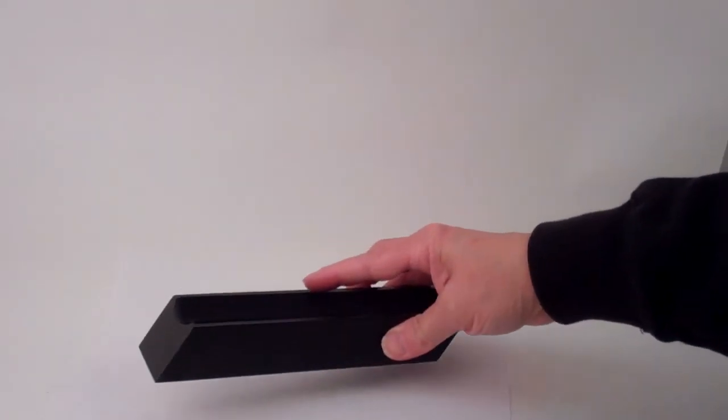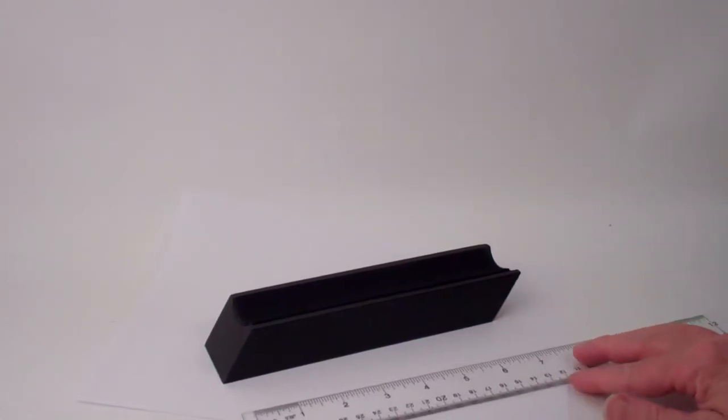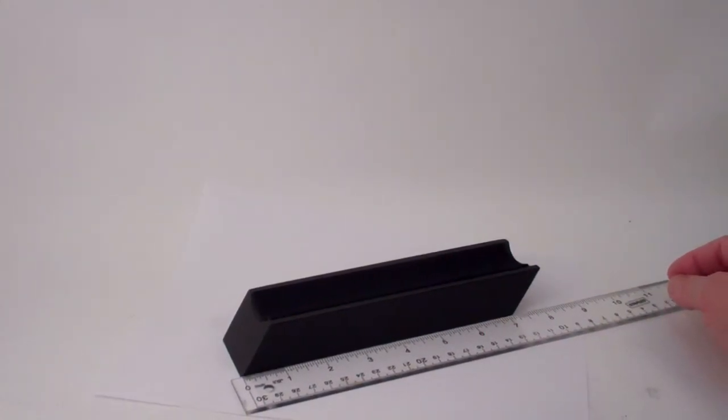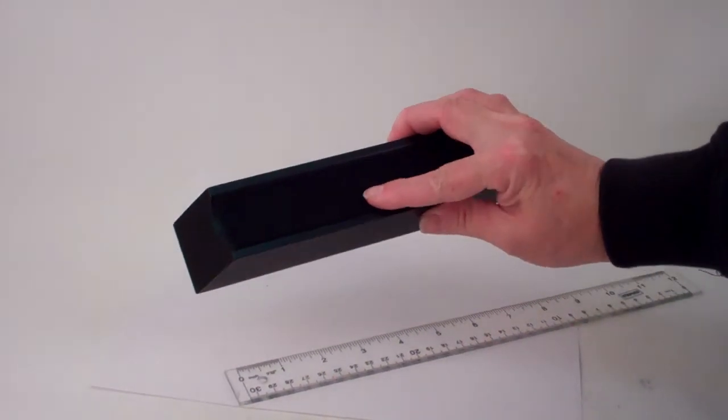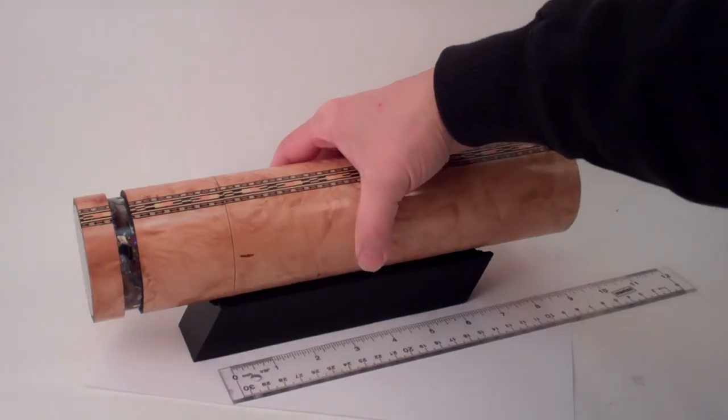The base that it comes with is solid black wood and it's a modern asymmetrical design approximately eight inches in total length and it has a felt lining so the kaleidoscope rests upon it beautifully.